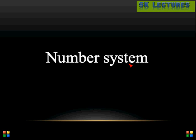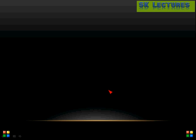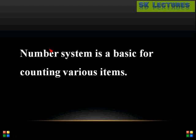The decimal number system is named so because it contains a total of 10 digits, 0 to 9. As we are familiar with the decimal number system, we need to concentrate on how to properly define a number system. A number system is a basic tool for counting various items.